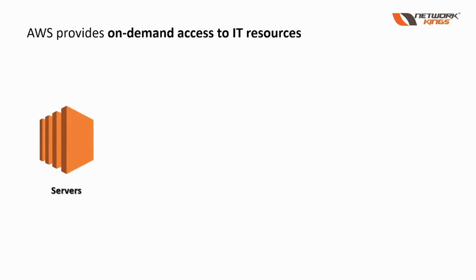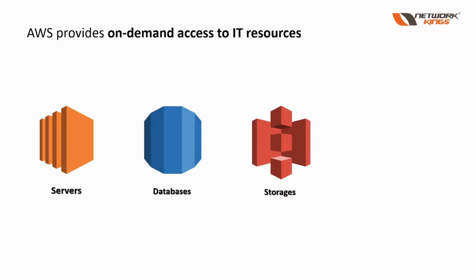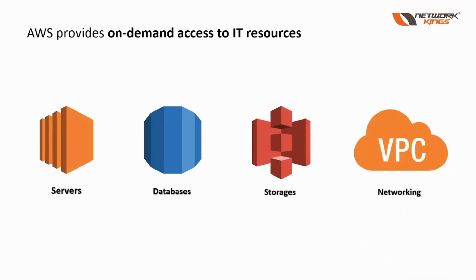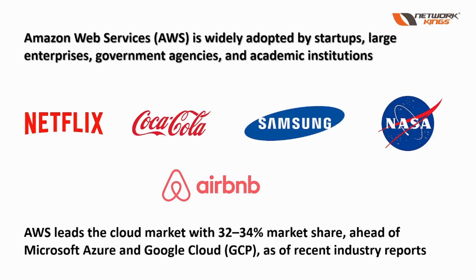AWS provides on-demand access to IT resources like servers, databases, storage, and networking, all based on a pay-as-you-go pricing model. Startups, large enterprises, government agencies, and academic institutions have widely adopted Amazon Web Services. Companies from almost every industry use AWS due to its flexibility, scalability, and global infrastructure — some examples are Netflix, NASA, Coca-Cola, Airbnb, Samsung, and even startups and government organizations.